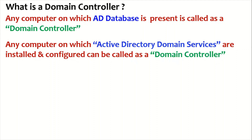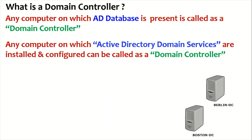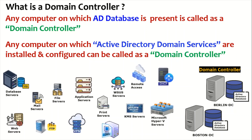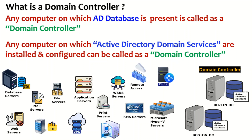Let's take an example. We have two servers — Berlin DC and Boston DC — and we have installed active directory domain services on these servers. The database got created and that's the reason these servers are called domain controllers. Other servers in our infrastructure, such as database servers, application servers, and DHCP servers, are not domain controllers because they don't host the active directory database. They can be either member servers or standalone servers.